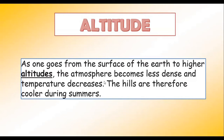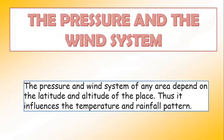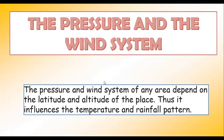The pressure and wind system of any area depends on the latitude and altitude of the place, and thus it influences the temperature and rainfall pattern. At the foot of the mountains, the wind may not be blowing as fast as it will be on top of that mountain. Air pressure depends on the latitude — whether you're closer to the equator or away from it. So pressure and wind system depend on latitude and altitude, and they influence the temperature and rainfall pattern.